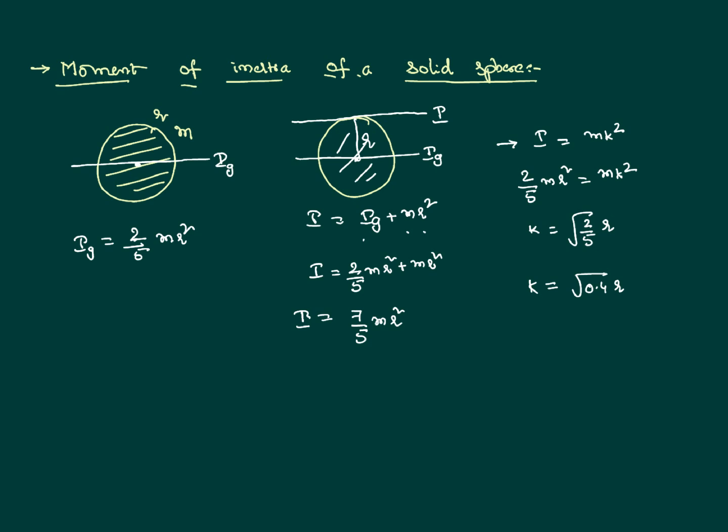if you take the solid sphere, its entire mass—this is what we have written as 2/5 MR² about an axis passing through the diameter. From this,